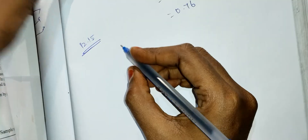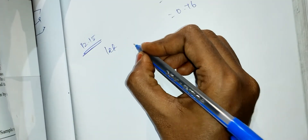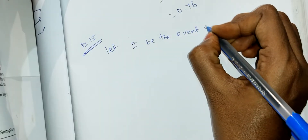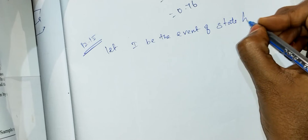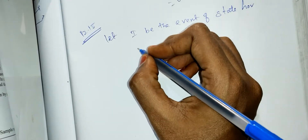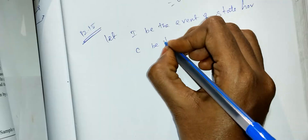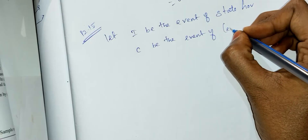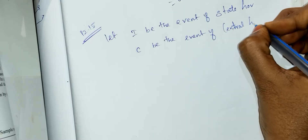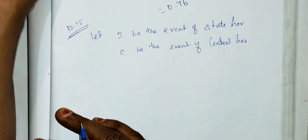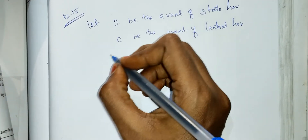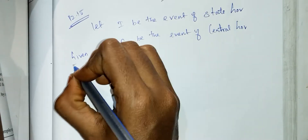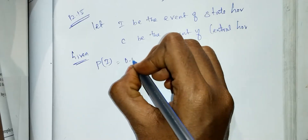Let us define the events. Let event A be getting a state government job. Let event C be getting a central government job. The probability of A is given as 0.12.